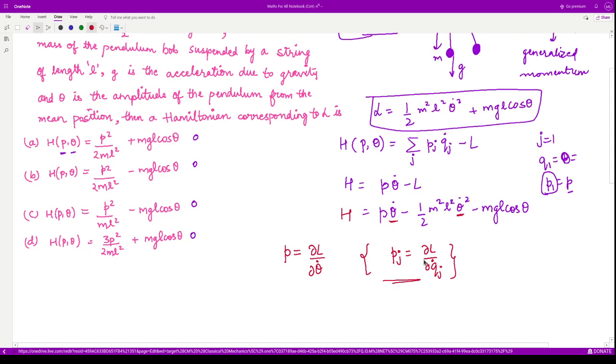So here, we have to calculate this thing. What is the derivative of l with respect to theta dot? Theta dot is only appearing in the first term. So we would have half m square l square as such because these are constants. And the derivative of theta dot square would be 2 into theta dot. And the second term there is no theta dot, so it would be 0.